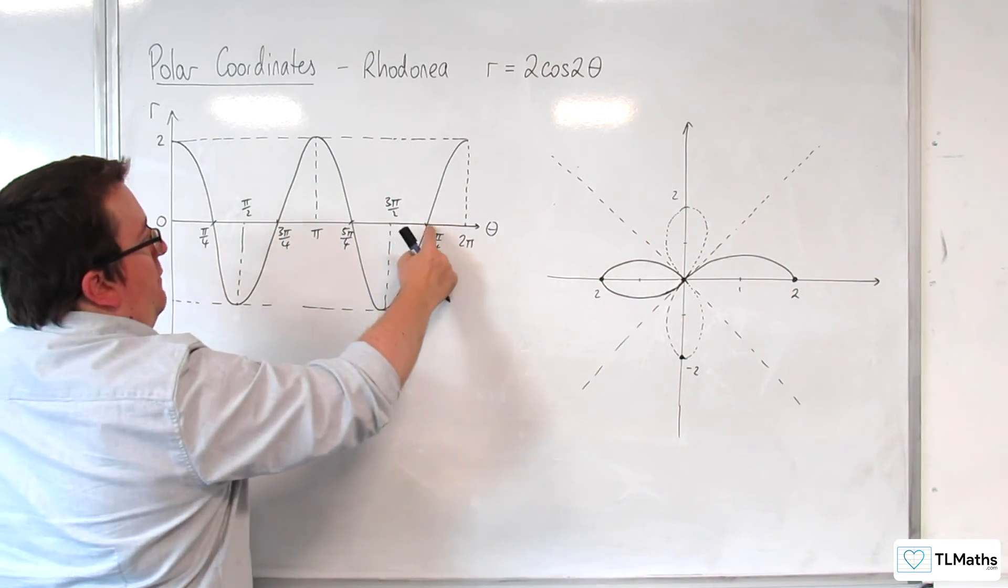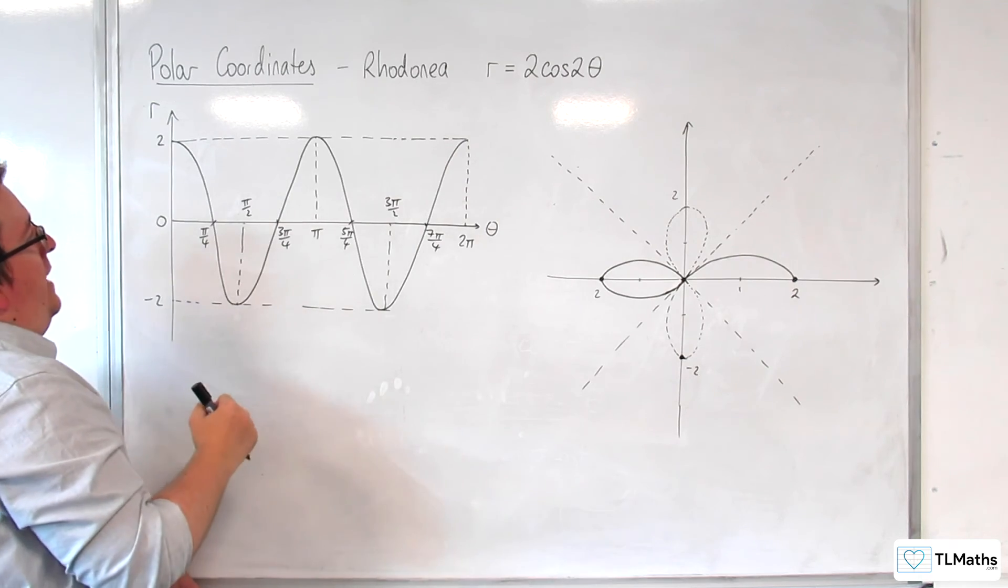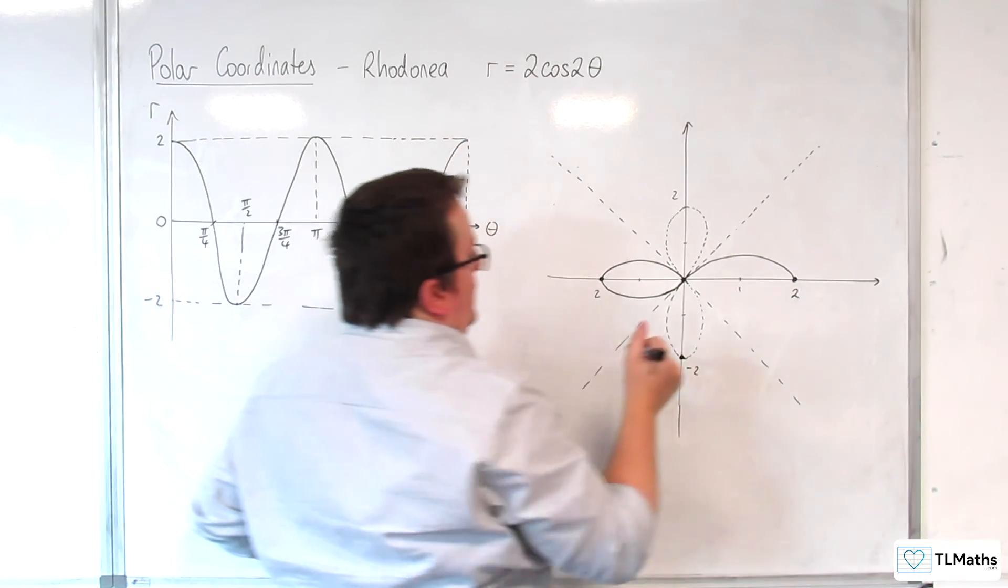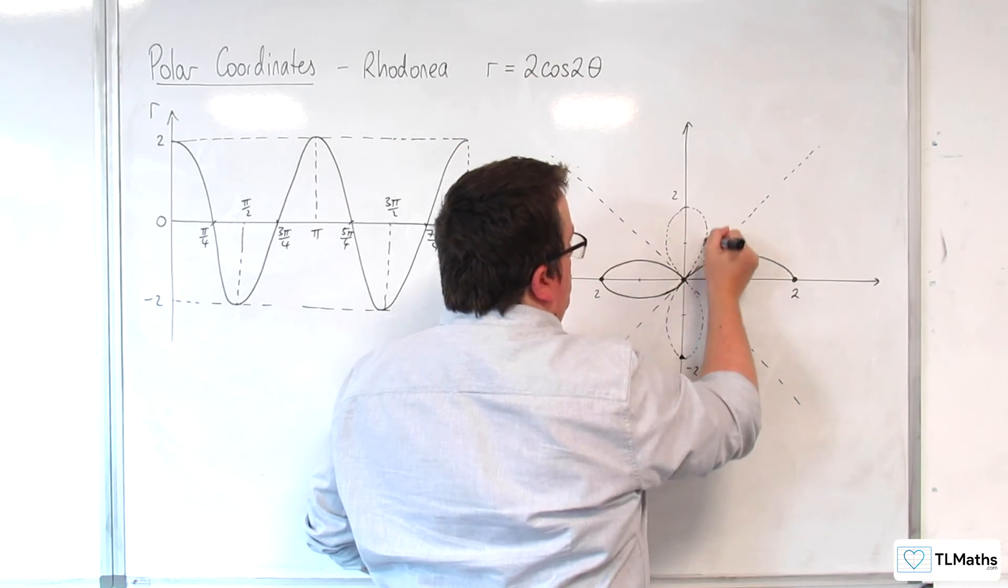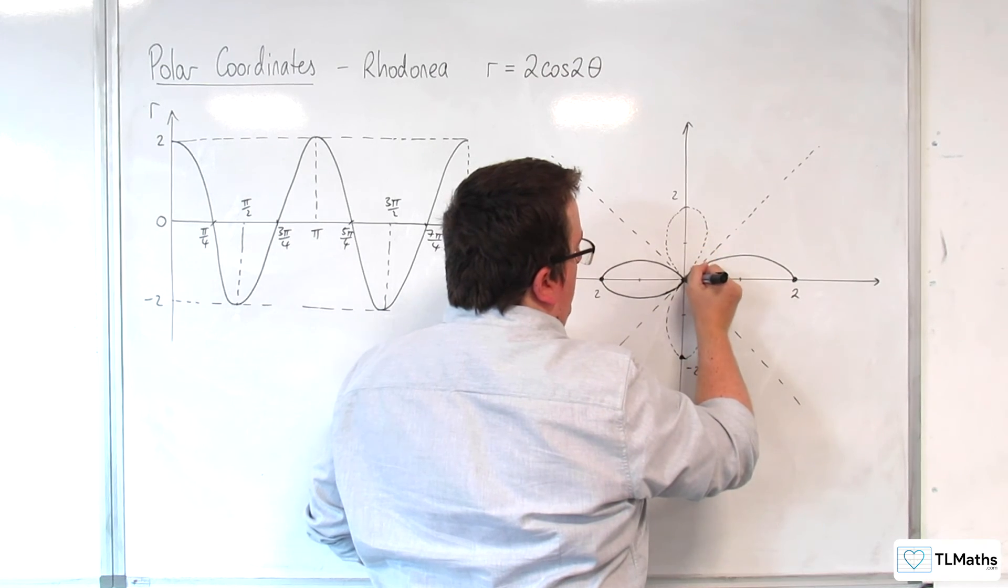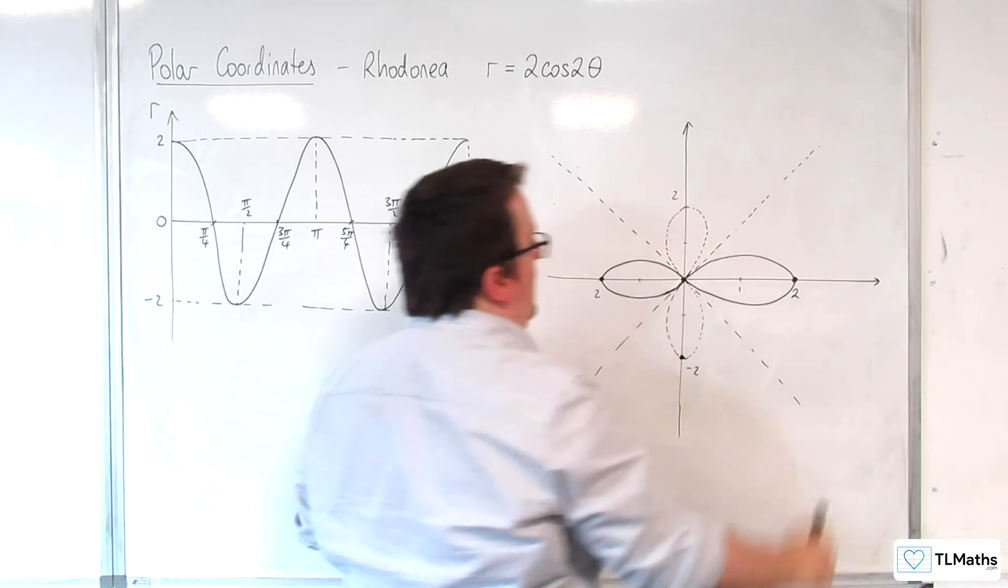And then, from 7 pi over 4 to 2 pi, r is positive again. And we're getting back to 2. And so, the curve's coming round there, and then back round there.